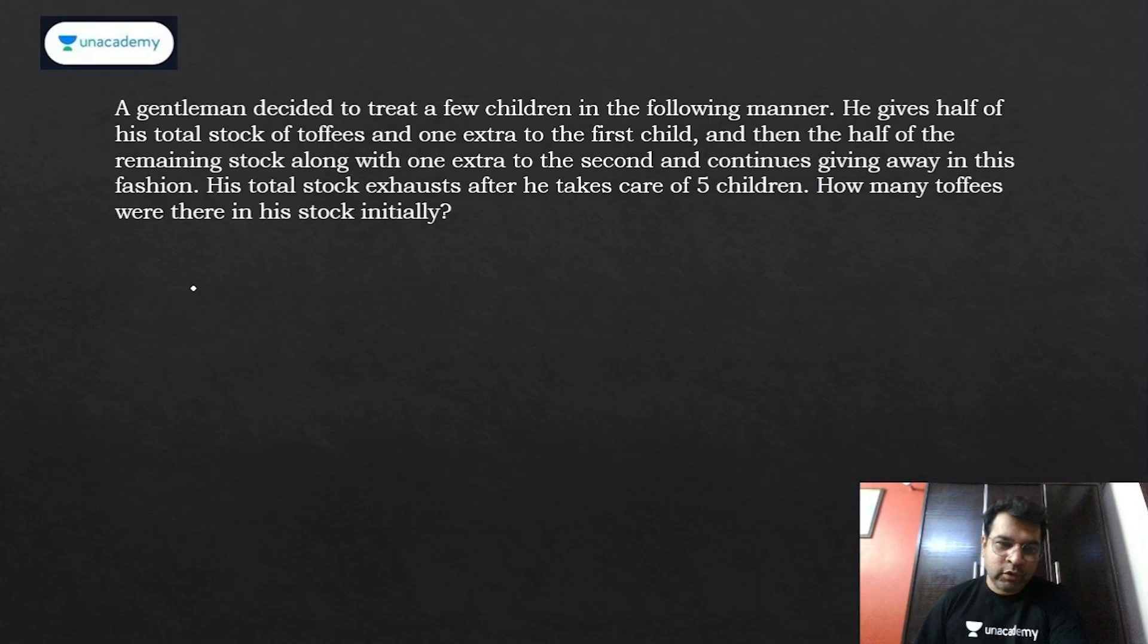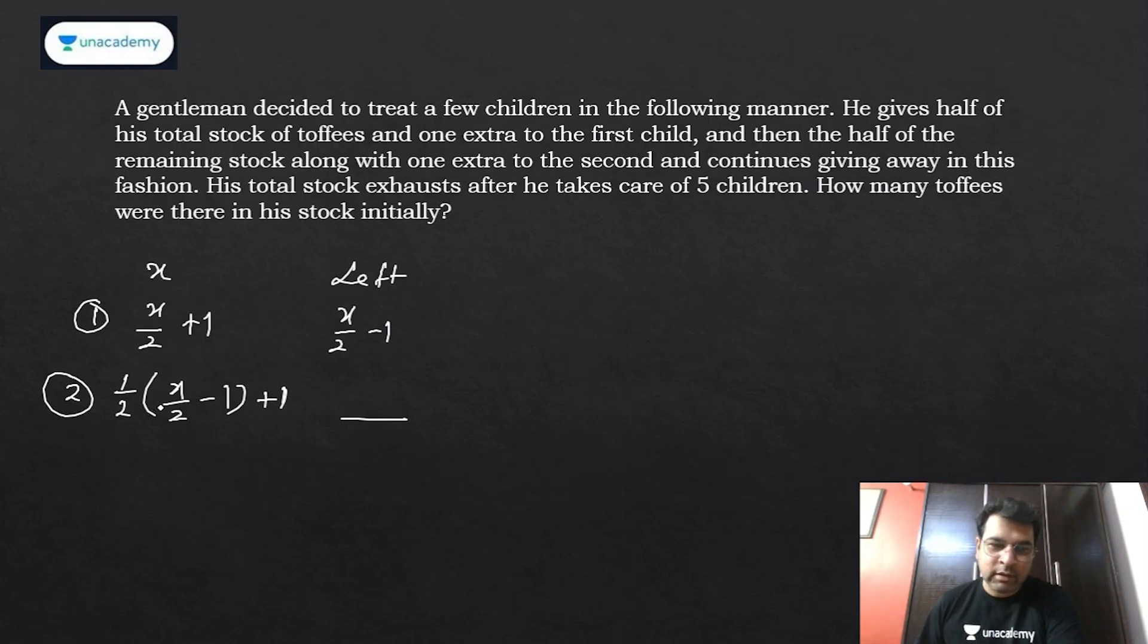Suppose if you start with x, so the stock is x. The first child gets half of that plus one extra, leftover is x/2 minus 1. The second child gets half of x/2 minus 1 and then one toffee extra. You can see even after the second or third child the complication is getting high - the equation will get more and more confusing. This is not the approach for solving such questions.